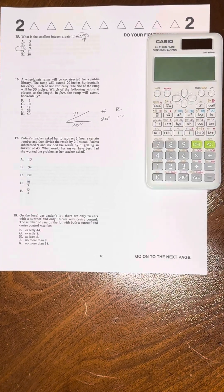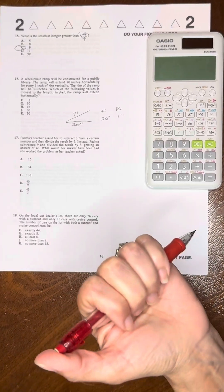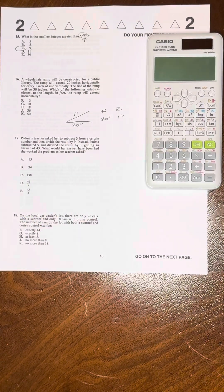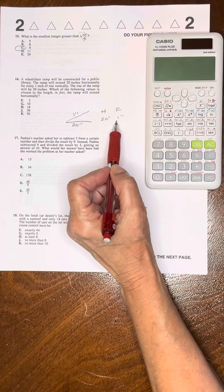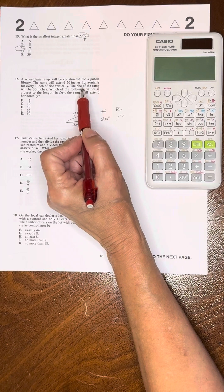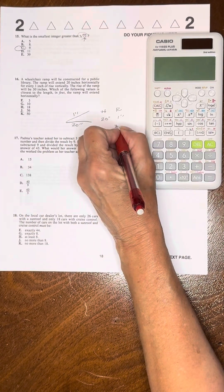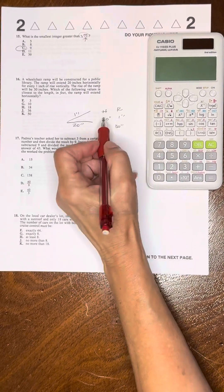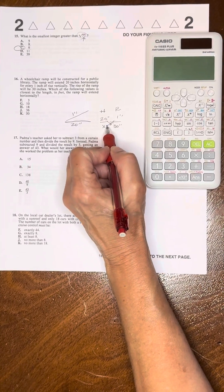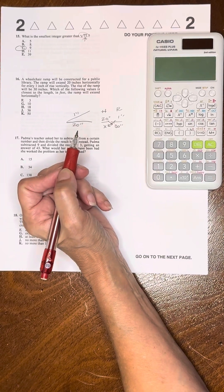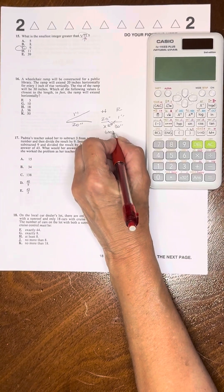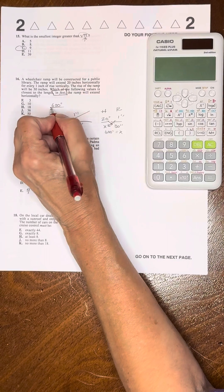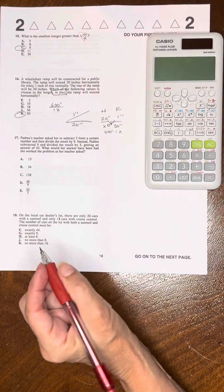This is the December 2022 ACT math test starting in problem 16, form F07. A wheelchair ramp will be constructed for a public library. The ramp will extend 20 inches horizontally for every 1 inch vertical rise. What will be the horizontal length if the rise is 30 inches? I just did a ratio table, set it equal, cross multiply. You have 600 inches equals X, but it wants to know in feet, so you do a unit conversion. 600 inches divided by 12 inches in a foot gives you 50. The answer is K.